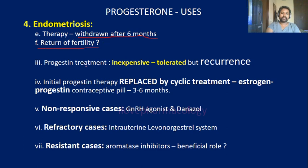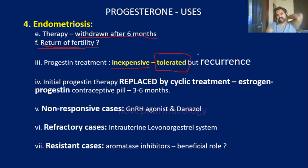The return of fertility after progesterone treatment for endometriosis is doubtful. Progesterone is chosen because it is very inexpensive and well tolerated. The main concern about using progesterone for endometriosis is that the recurrence rate is very high.